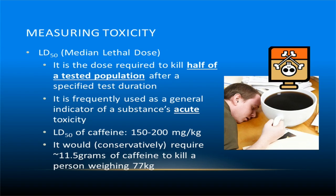For instance, the median lethal dose of caffeine is roughly 150 to 200 milligrams per kilogram of body mass. I weigh around 170 pounds, or about 77 kilograms, so I would need to take roughly 11.5 grams of caffeine before it killed me. This is about 121 cups, or 7.5 gallons of coffee. So if you're thinking about chugging 8 gallons of coffee, I'd strongly advise against it.